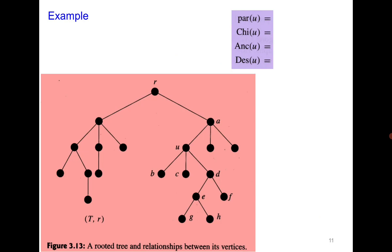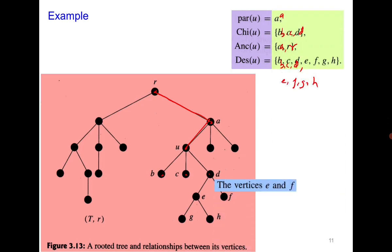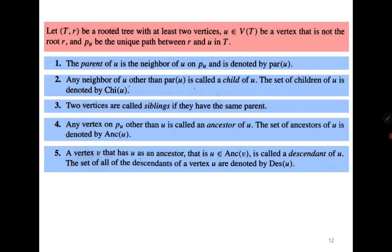Consider the following rooted tree. With respect to a rooted tree we can define the concepts of parent, children, ancestors, and descendants. For vertex u: the parent is a, the children are b, c, d. The ancestors of u are a and r, since that is the path toward the root. The descendants of u are b, c, d, and also e, f, g, h. Vertices e and f are siblings. These concepts — parent, children, siblings — can only be defined for rooted trees.